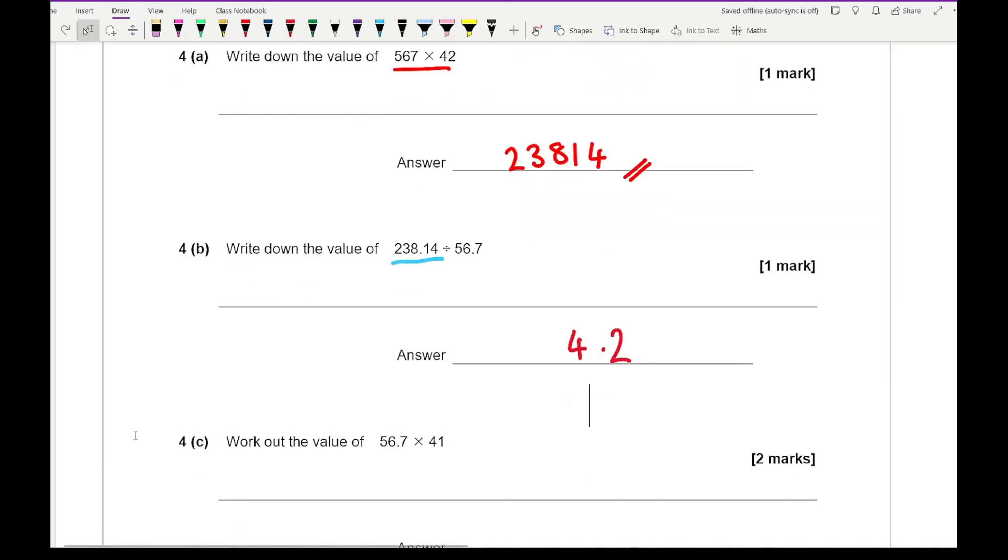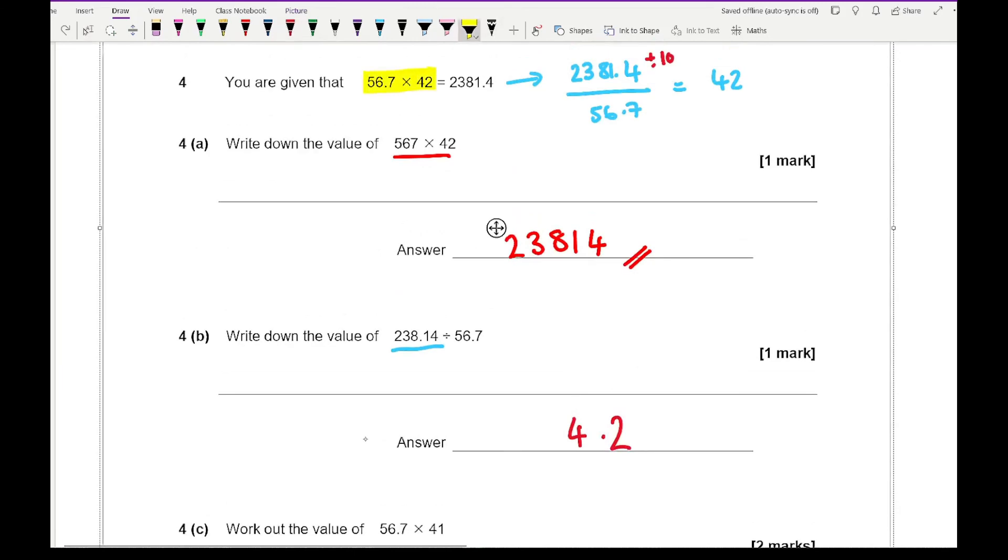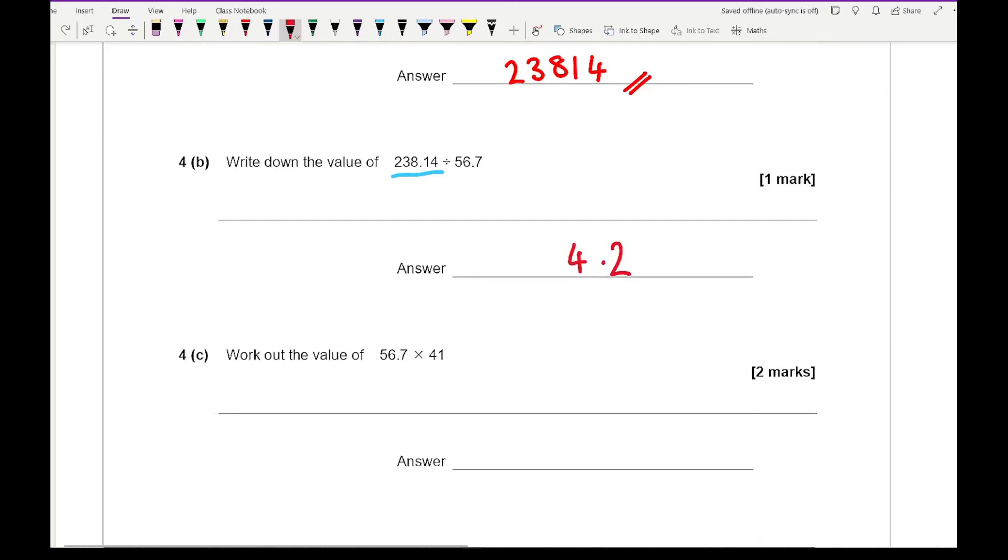It then says work out the value of 56.7 multiplied by 41. We've got 56.7 times 42, so to do 56.7 times 41, all I need to do is take away 56.7 from 2381.4. You can either work out 56.7 multiplied by 41, or you could do 2381.4 minus 56.7. Either of those are fine, whichever you prefer, and we should end up with the correct answer of 2324.7.